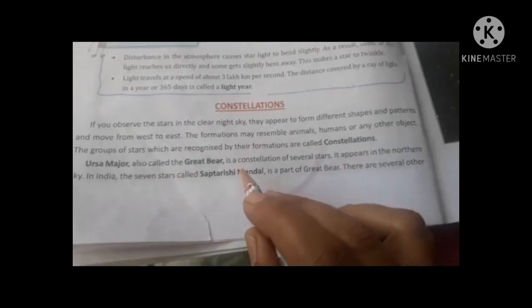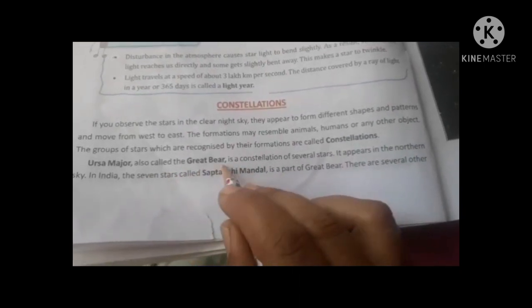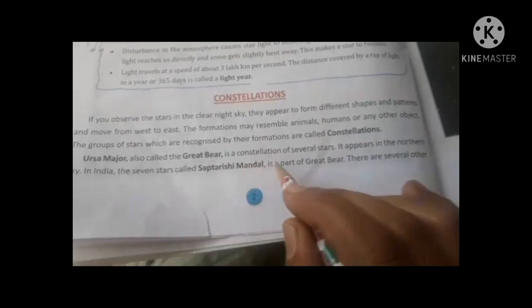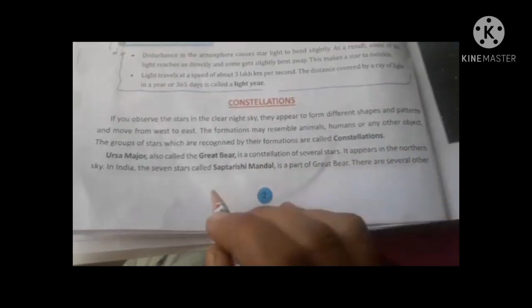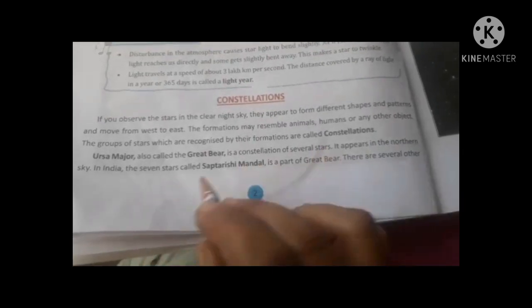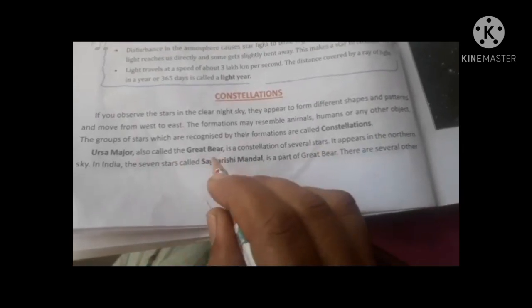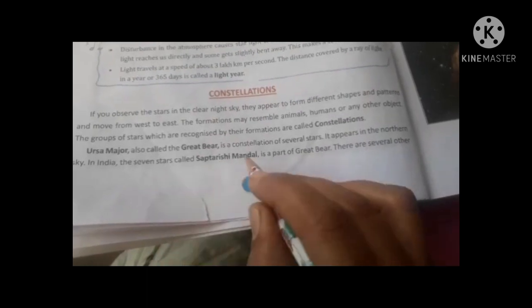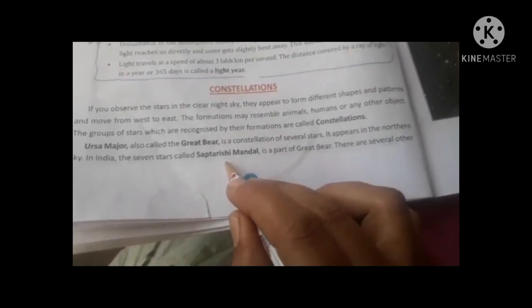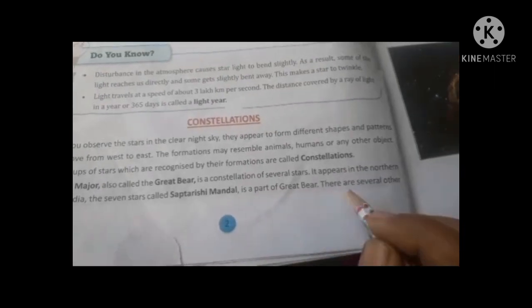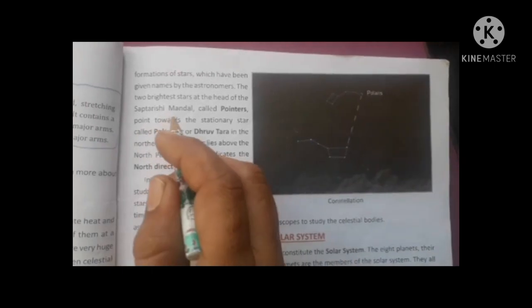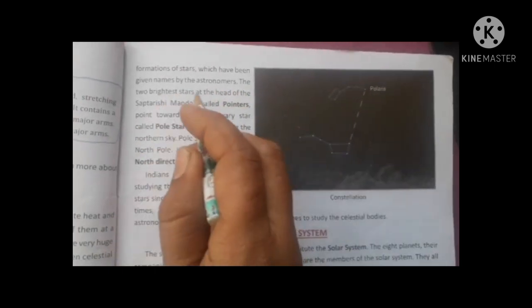Also called the Great Bear, this is a constellation of several stars. It appears in the northern sky, which looks like a bear. This constellation includes seven stars which we call Saptarishi. The Saptarishi Mandala is a part of the Great Bear. There are several other formations of stars which have been given names by astronomers.